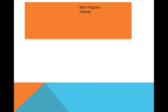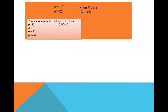Consider this rectangle as a main program where we have a variable 'a' which is defined as a equals 10. We also have a print function — this small rectangle represents that print function — where we have two variables 'd' and 'e' defined as d equals 6 and e equals 7, and we are printing the values of d and e. This main program is considered as the global block.